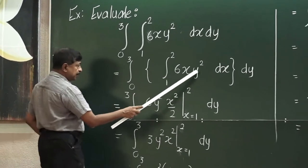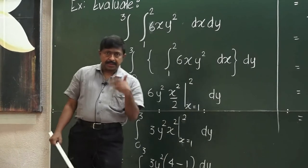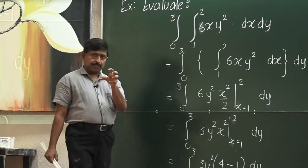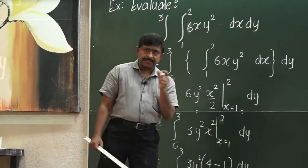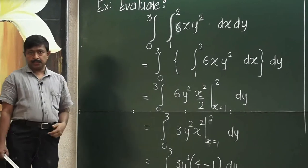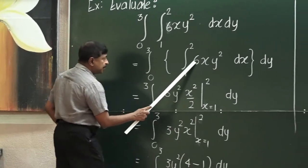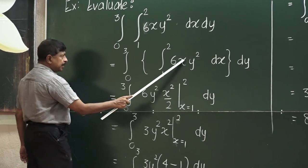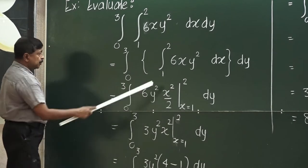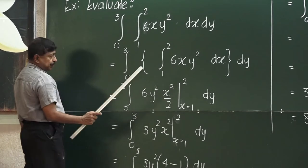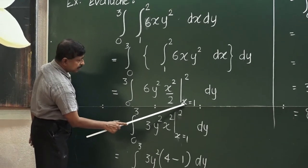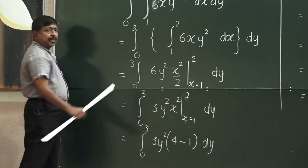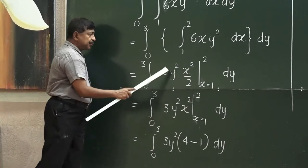Therefore, 6y² can be treated as a constant. It is like integrating 5x — you keep 5 as it is and integrate x to get x²/2. So here, 6y² stays as 6y² and you integrate x to get x²/2. The lower limit is 1 and the upper limit is 2. You should write the variable to avoid substituting values into the wrong variable.